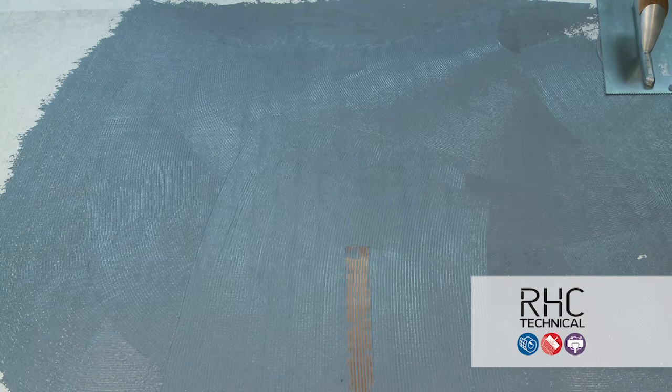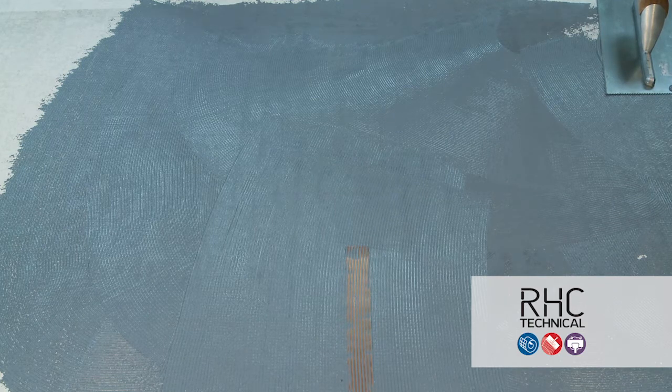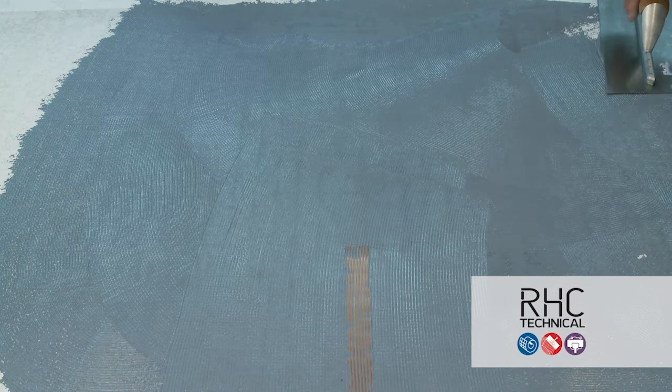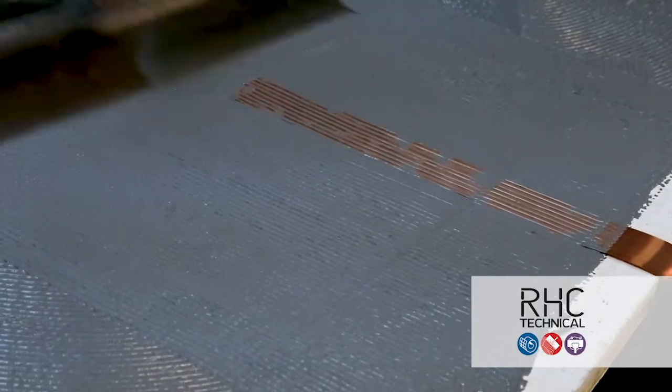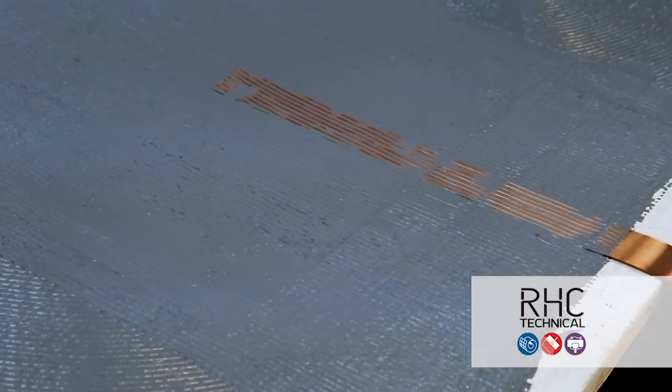Once the initial layer of adhesive is spread, install the copper strap into the adhesive and then apply additional adhesive over the top of the copper strap and make sure it's embedded before installing the tile.